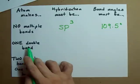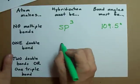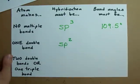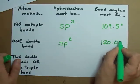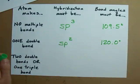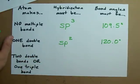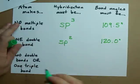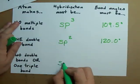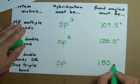If you have one double bond to the atom and that's it, it's going to be sp2 hybridization, and the bond angles around that atom are going to be 120 degrees. Finally, if you have two double bonds attached to the same atom, or if you have one triple bond on an atom, then the hybridization is going to be sp and the bond angle is going to be 180 degrees.